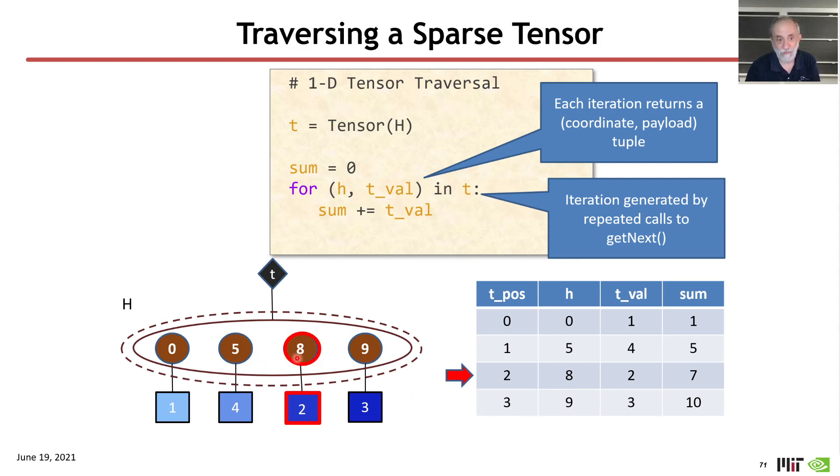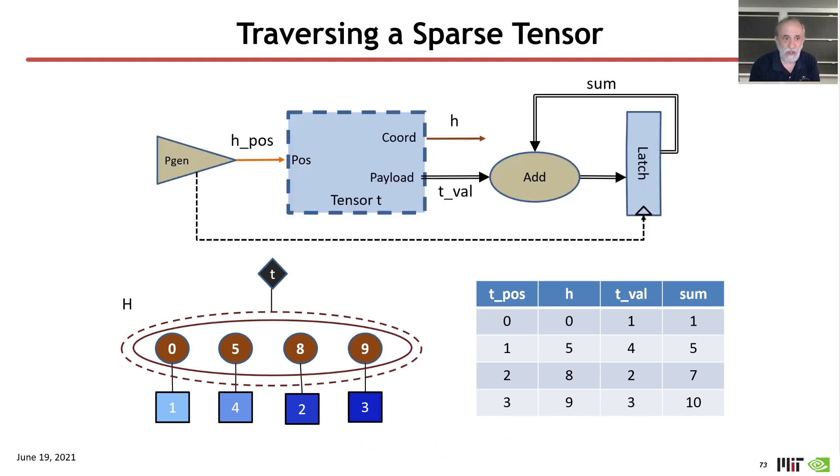I then move to the second position, third position, position two, coordinate eight, value two, and add it into my sum, and finally the last position, the fourth position, position three. I have my coordinate nine and my value three. So that was a very simple case,